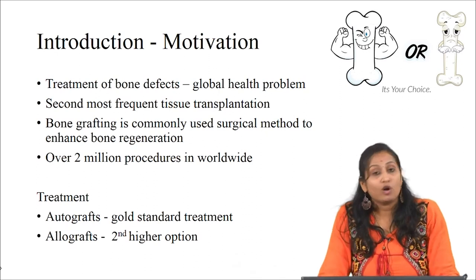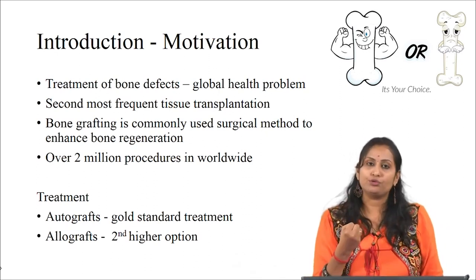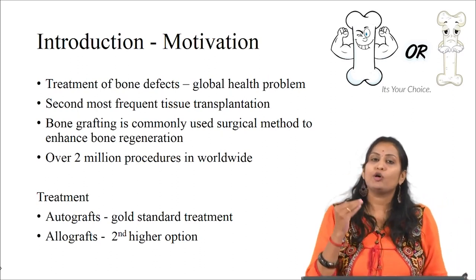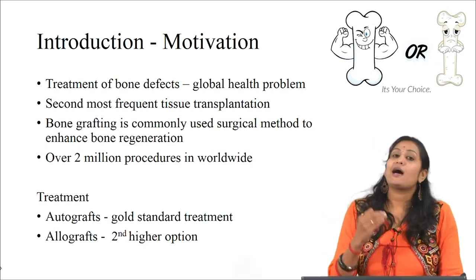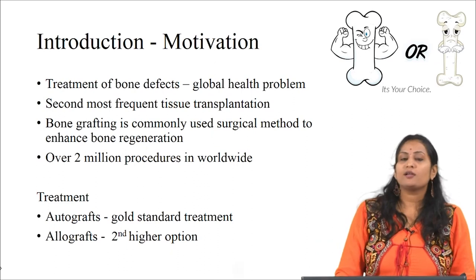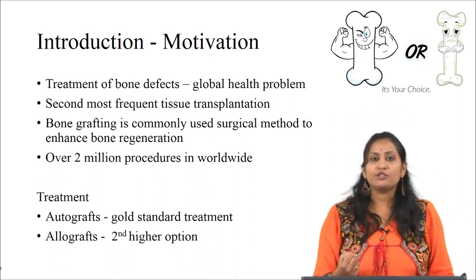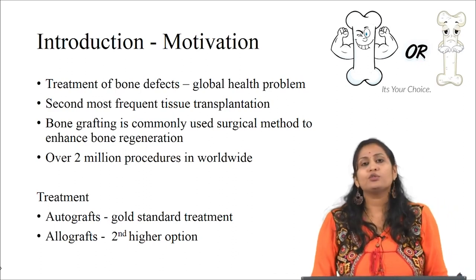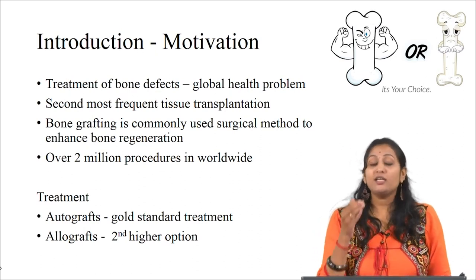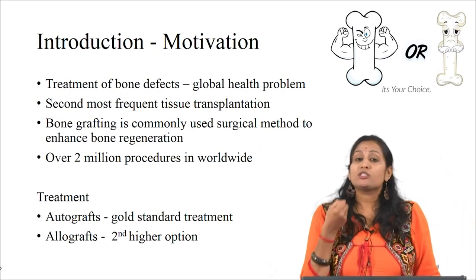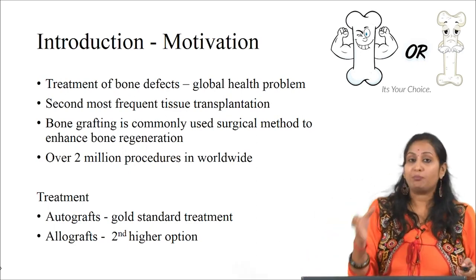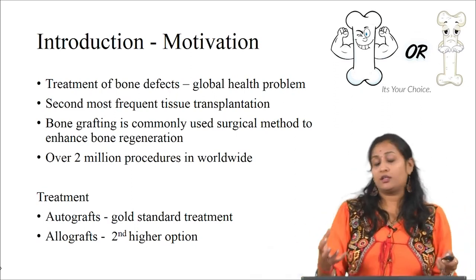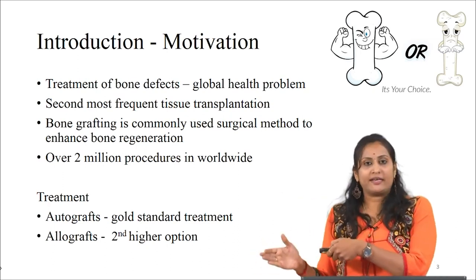The treatment options for bone grafting include autografting, where we graft tissue from the same individual. It is considered the gold standard treatment because of its ideal biocompatibility in terms of structural as well as immunological properties. The second option is allografts, where we graft tissue from a different individual of the same species. However, in autograft it requires harvesting from a donor site, which not only increases pain but also increases surgery time, bleeding, and donor site morbidity.